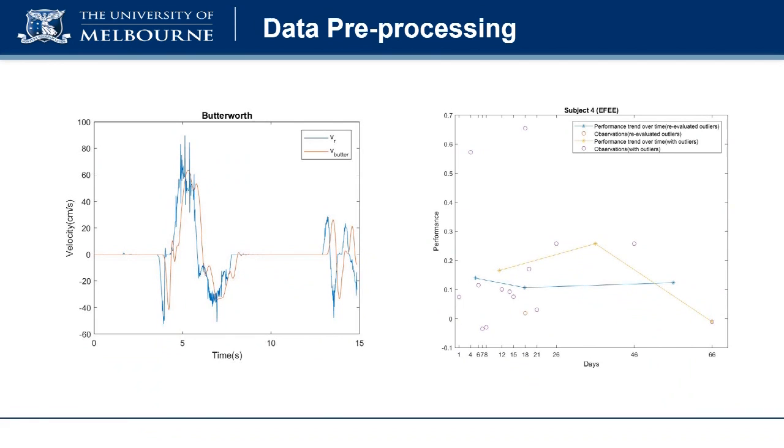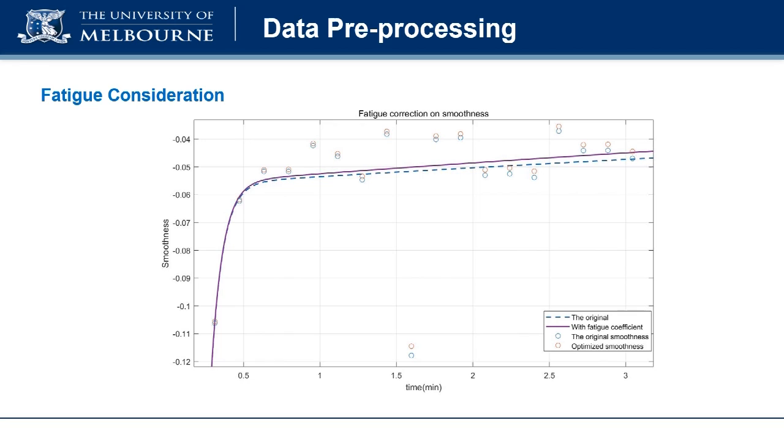For the data pre-processing, Butterworth filter is implemented to remove high-frequency components. Outliers are detected and re-evaluated. The effect of fatigue is also considered. The example of the fatigue correction and smoothness indicates that the outcome is optimized after applying fatigue coefficient.